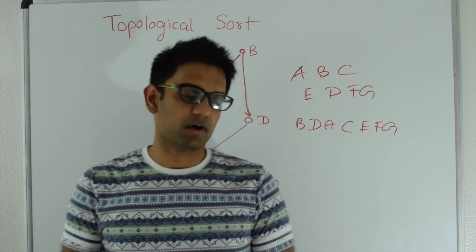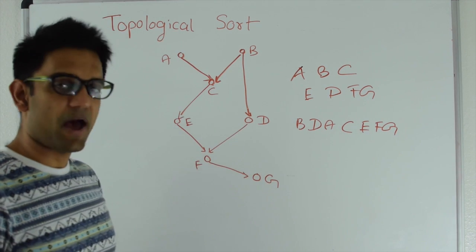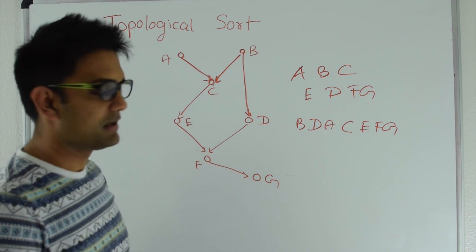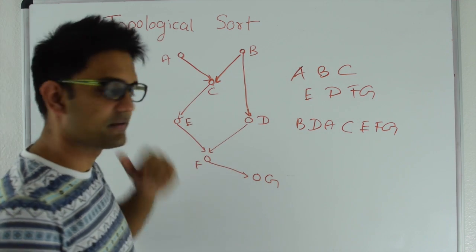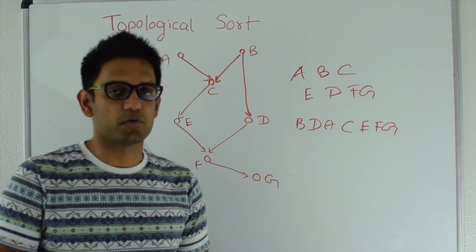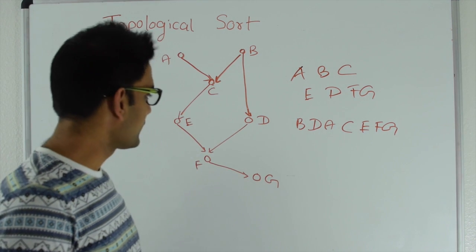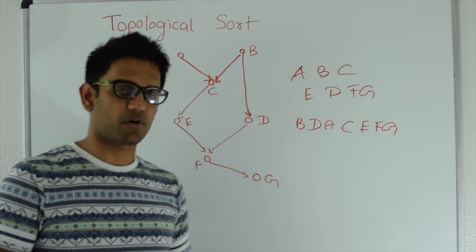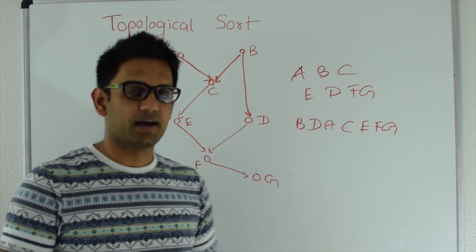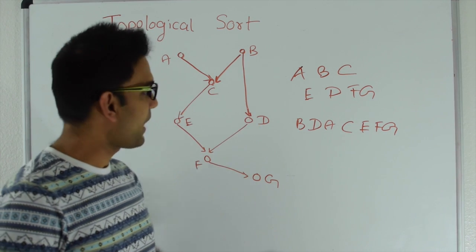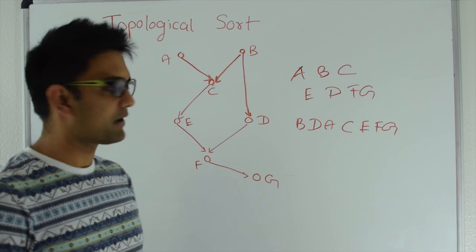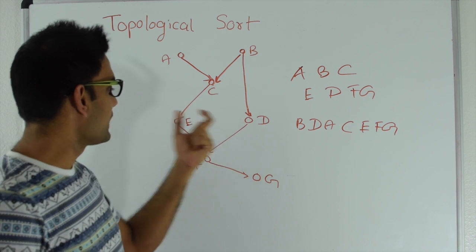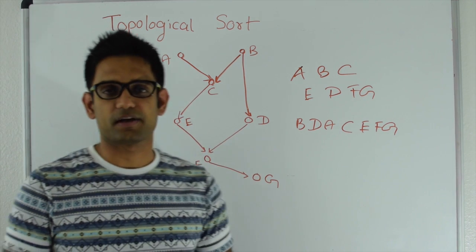One application of topological sort is in the build system. Suppose these were packages where c has a dependency on a and b, d has a dependency on b, and e has a dependency on c. The build system builds a graph of the packages, applies a topological sort, and then builds the packages in that order — a and b first, then c, then e and d, then f, then g.